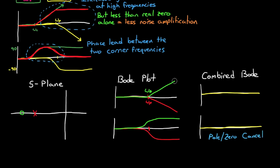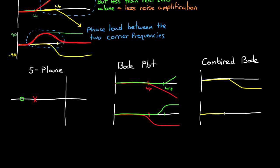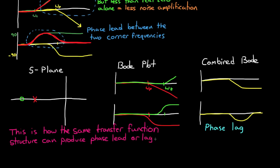Now we'll take the zero and move it even further to the left. And this becomes a phase lag system since the pole is now closer to the origin than the zero. And when I redraw the Bode plot for a real zero, you'll see that it doesn't start to affect the system until a higher frequency than omega p. So that when I add them together, the system starts to behave like a real pole at lower frequencies before being canceled out by the real zero at a higher frequency. And this adds phase lag to the system. So hopefully this quick demonstration shows you how the exact same transfer function structure can produce either phase lead or phase lag just by adjusting the relative position of the pole and the zero.